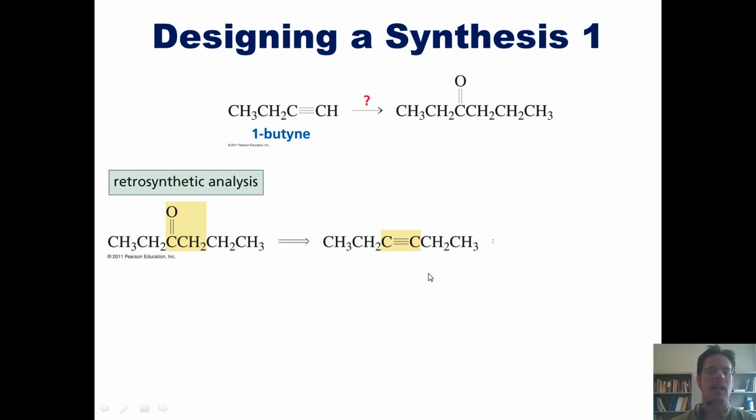I learned in our earlier slide that if I take 1-butyne and treat it with a hard base that can remove this terminal hydrogen, and then an alkyl halide, in this case, ethyl bromide or ethyl iodide or ethyl chloride, I can add a CH2, CH3 to the end of it. That would take me back to my original starting material.